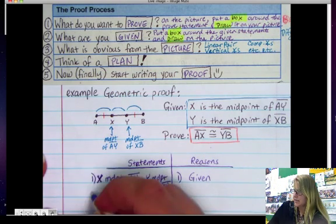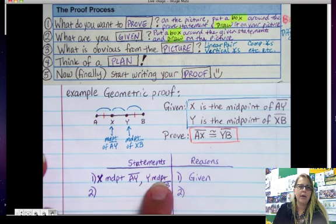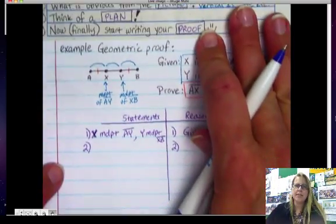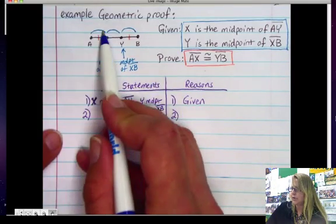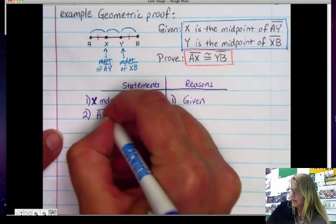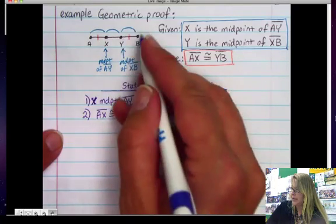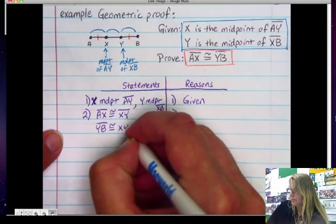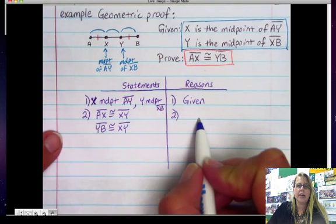The second step now is to use what the statement is to help me continue my proof. So you'll notice that I already talked about it a little bit. I said that if it's the midpoint, then these two have to be equal. So that's, we're just going to state that. So AX is congruent to XY. And I'm going to go ahead and say the other one as well, YB is also congruent to XY. And my reason for that,